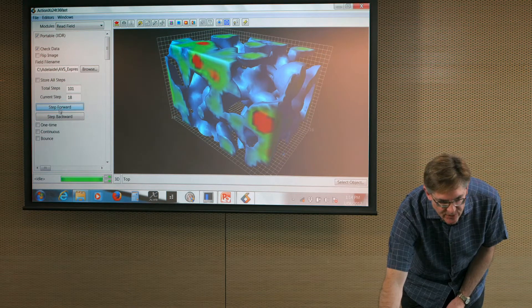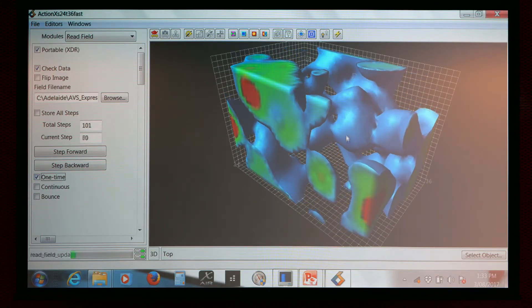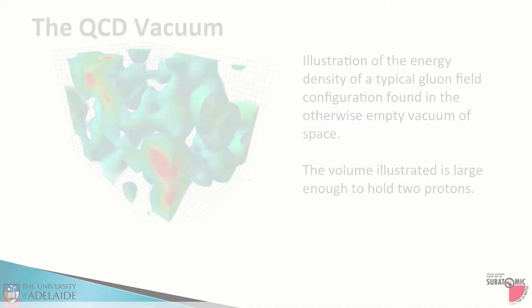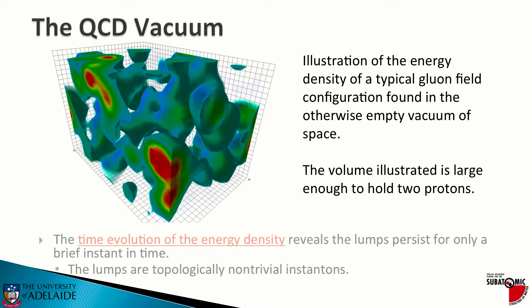You can see that there are some areas where it was very easy to remove the energy density and other areas where it persists. We understand the structure of the gluon fields and why those lumps persist, and this is absolutely critical to the origin of mass. We're looking at an illustration of the energy density of a typical gluon field; in lattice calculations we average over hundreds to thousands of these configurations. Now I want to show you the time evolution of these lumps on a periodic lattice.